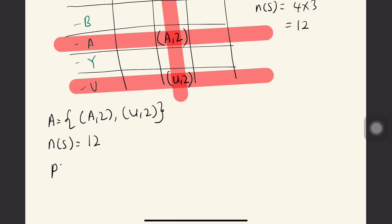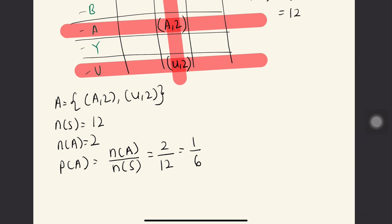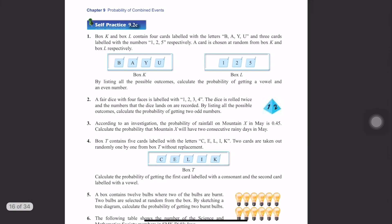So P(A): before that, number of A first. n(A). How many A? 2, right? 2. So probability of A equals number of events in A divided by number of samples. So n(A) is 2 and n(S) is 12. Simplify: 1 over 6. Easy, right?